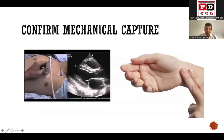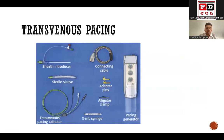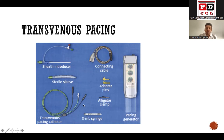Once there is electrical capturing, make sure you feel the pulse and confirm mechanical capture, because sometimes there may be electrical activity on the monitor but no ventricular contraction. Therefore you need to confirm mechanical capture. Transvenous pacing needs a bit of experience - you have a pacing generator and a transvenous pacing catheter introduced through a sheath introducer, advanced until it touches the right ventricle. This can be confirmed from a cardiac monitor or using a C-arm, then connected to the pacing generator with the appropriate current set.